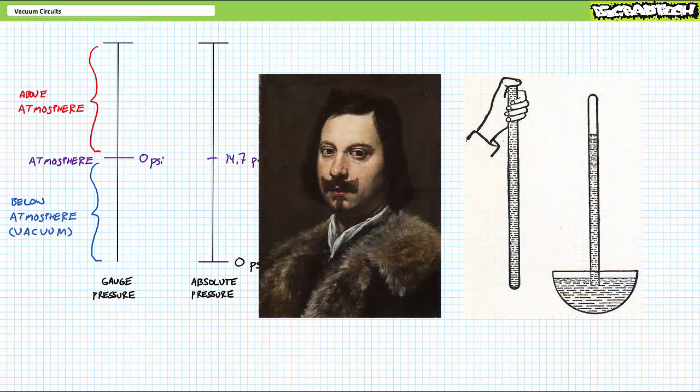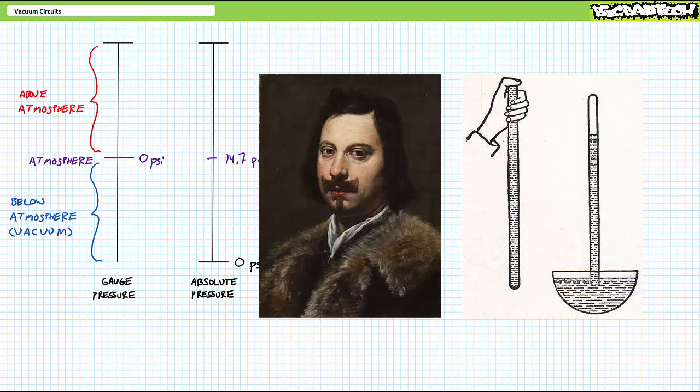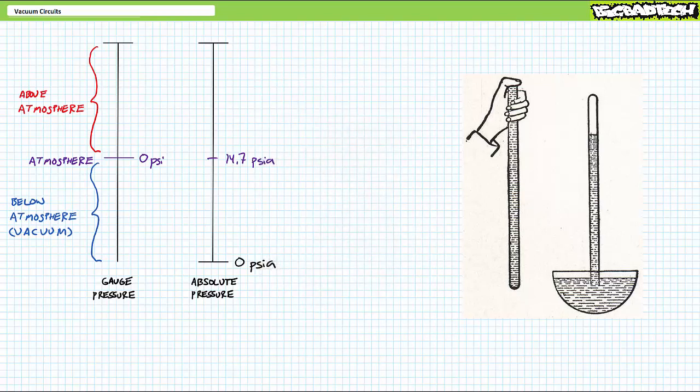Way back when people still wore powdered wigs and tights, some scientists by the name of Torricelli thought it'd be cool to fill a glass tube with a poisonous liquid metal mercury known in those days as quicksilver or hydrogirum, hence the symbol HG, and invert it in a bowl.